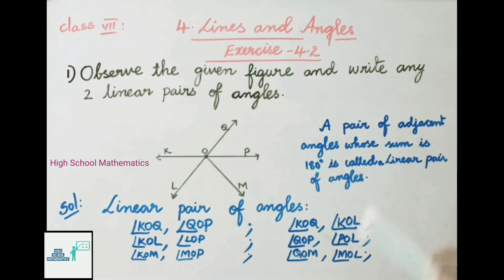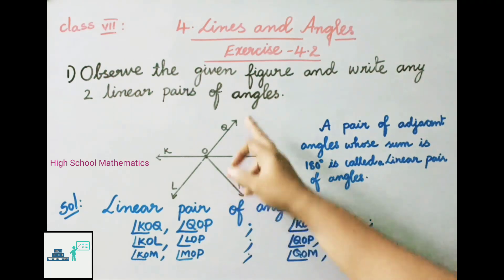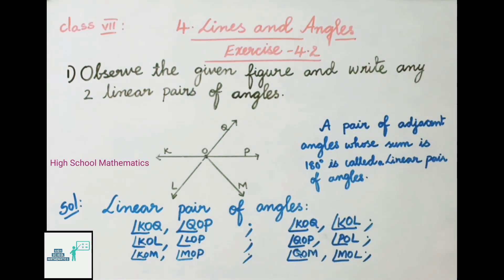Let us see the solution. Linear pair of angles are: angle KOQ and angle QOP — that is one pair. Second: angles KOQ and angle KOL — another pair. Next: angles KOL and angle LOP — another pair. Next: angle QOP and angle POL — another pair.